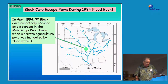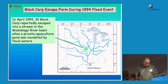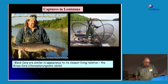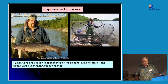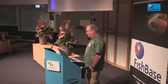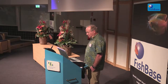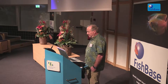Of the many farms holding black carp, only one confessed that their stocks escaped into the wild — this is typically the case. In April 1994, 30 black carp reportedly found freedom in the Mississippi River when a private aquaculture pond was inundated by floodwaters. However, during my work with commercial fishermen in Louisiana, I learned that these fishermen had been collecting a few black carp every year throughout the 1990s in deep-set hoop nets, having always assumed these fish were simply dark-colored grass carp.